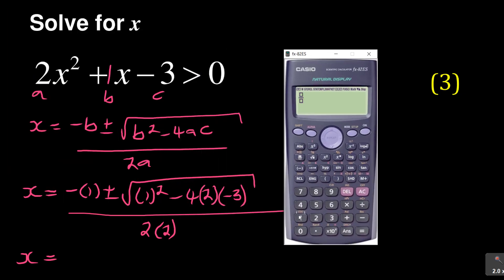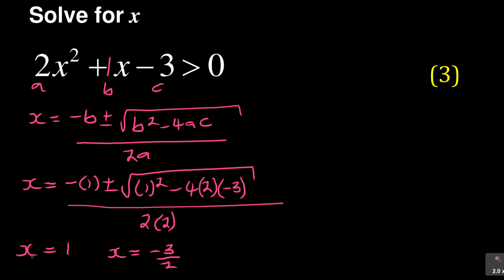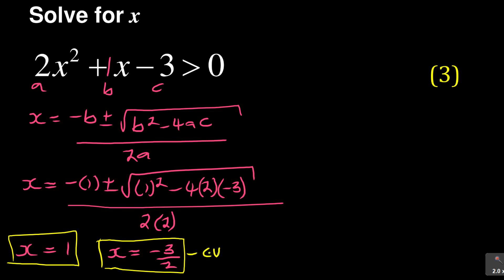Substituting in: x equals negative 1, plus or minus square root of 1 squared minus 4 times 2 times negative 3, all over 2 times 2. Working this out, the first answer is x equals 1, and the other is x equals negative 3 over 2. So x equals 1 or x equals negative 3 over 2. These are my critical values — I'll call them CV.